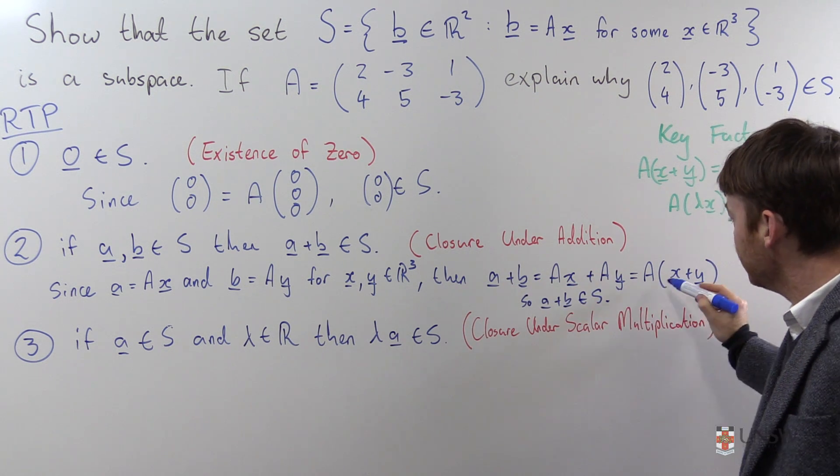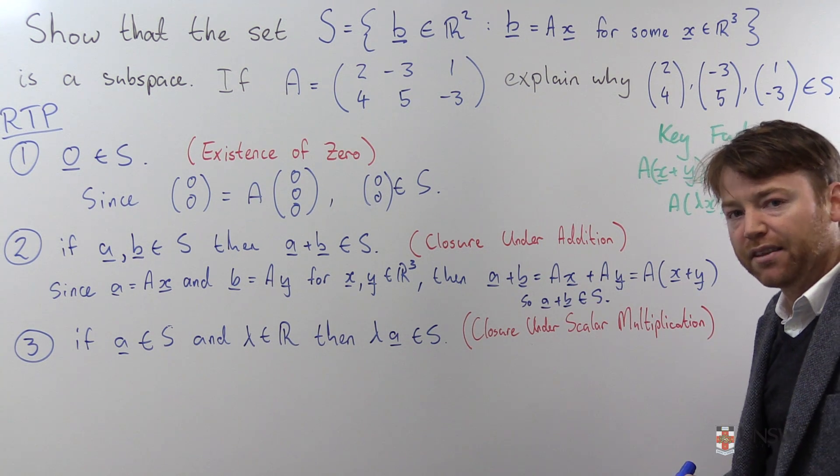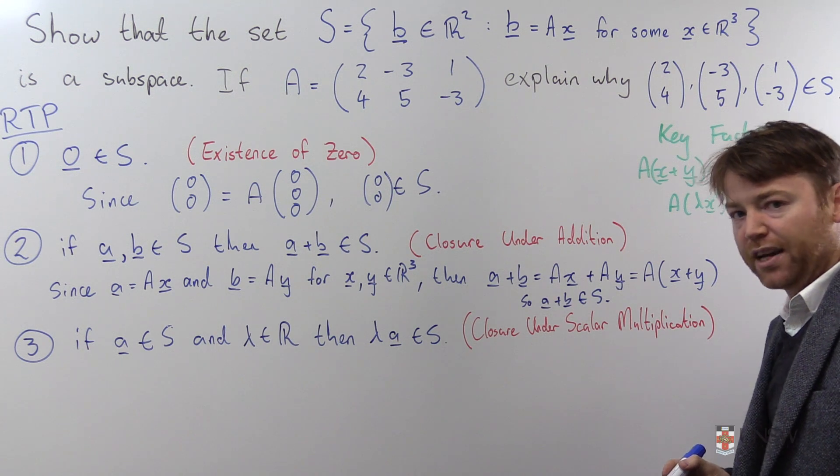Your vector A plus B is the image of some other vector, X plus Y in this case.